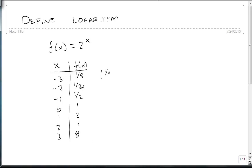This gives us the points: minus 3, 1 over 8; minus 2, 1 over 4; minus 1, 1 half; 0, 1; 1, 2; 2, 4; and 3, 8.